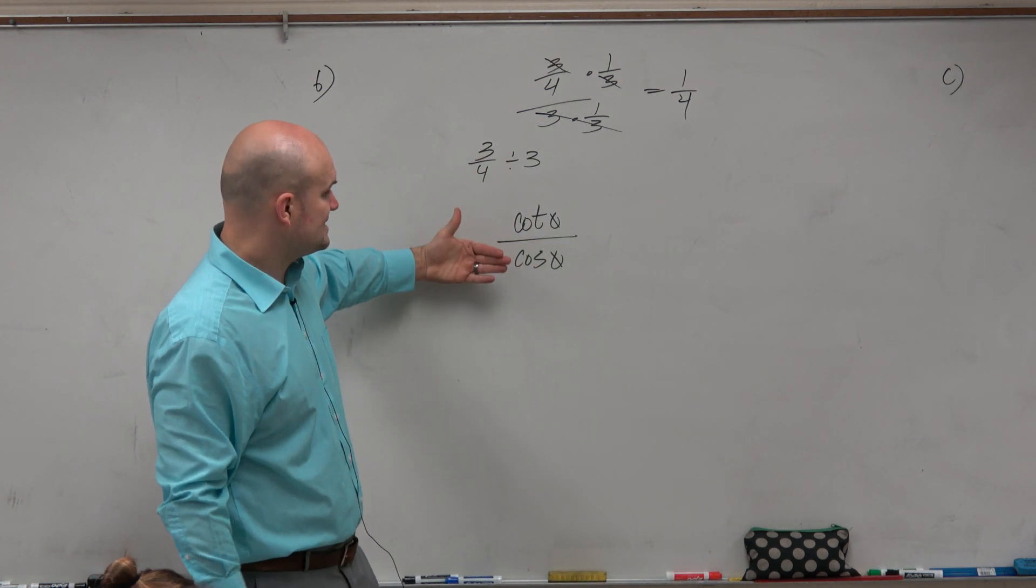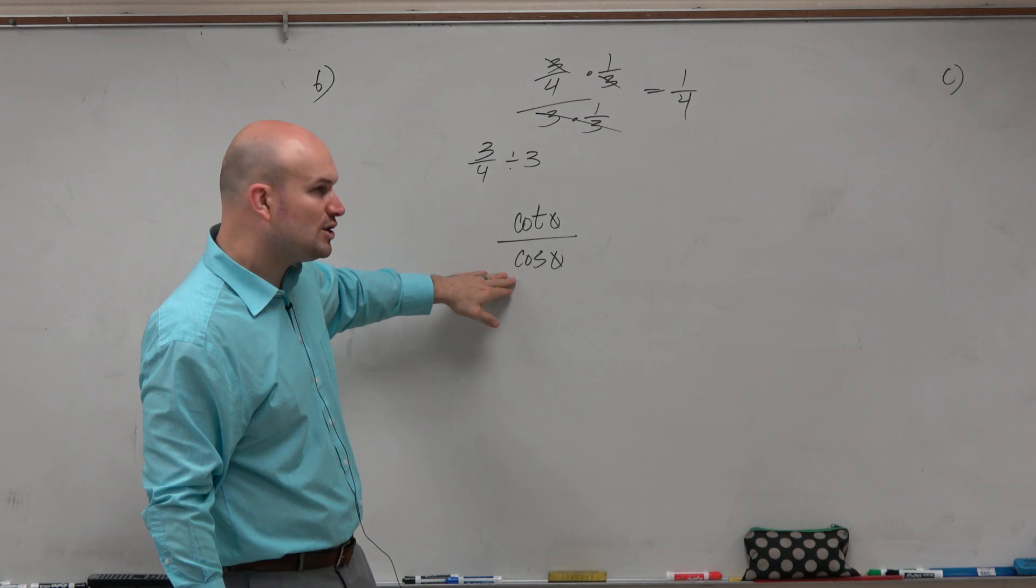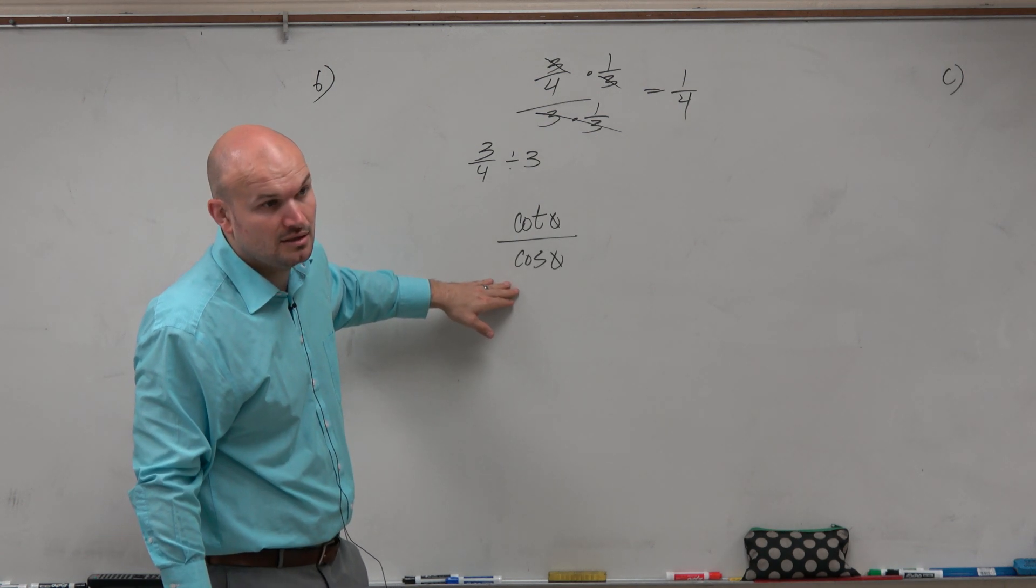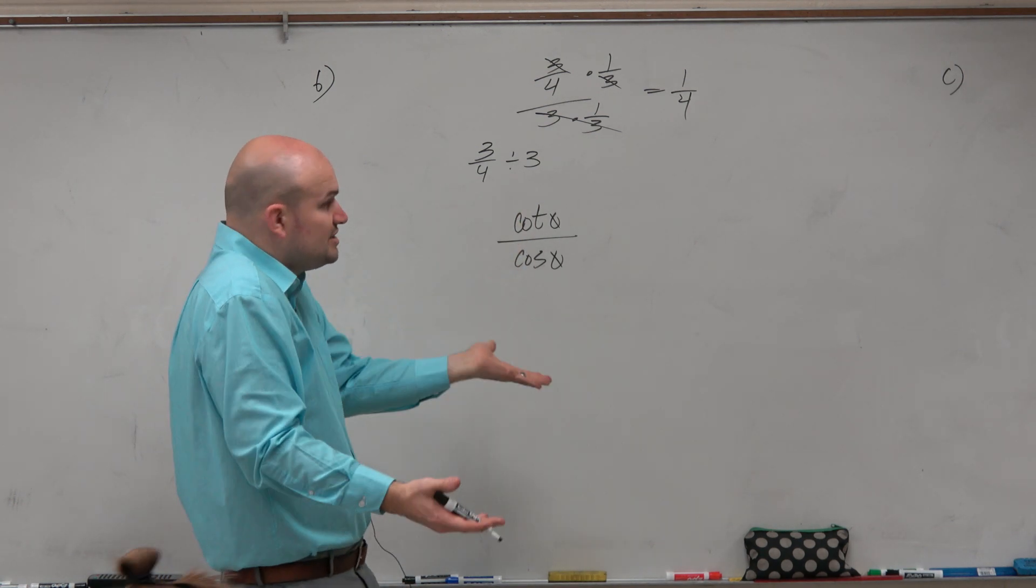So we can do this the exact same way. If I want to get rid of my cosine off the denominator, I need to multiply by its reciprocal, right? Which you could just say is secant.